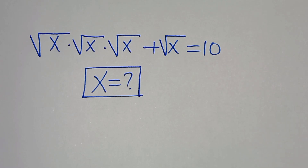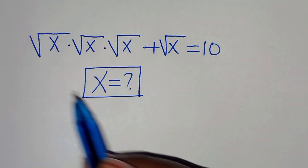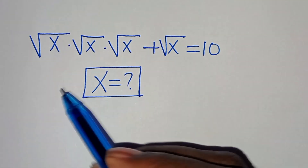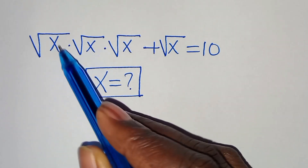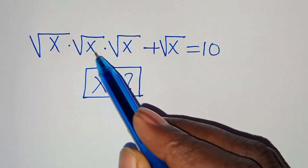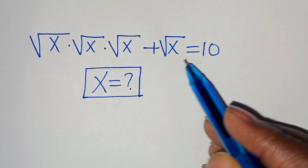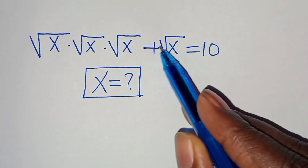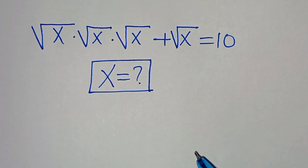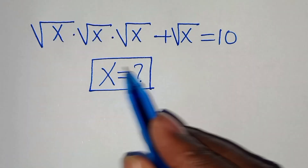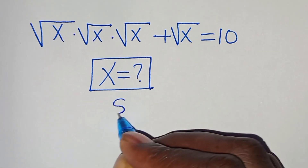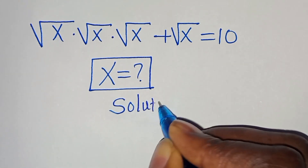Hello everyone, you are welcome to solve this nice square root math problem, which is the square root of x multiplied by square root of x multiplied by square root of x, plus square root of x, this is equal to 10. Now what are the values of x? Let's provide a solution from here.